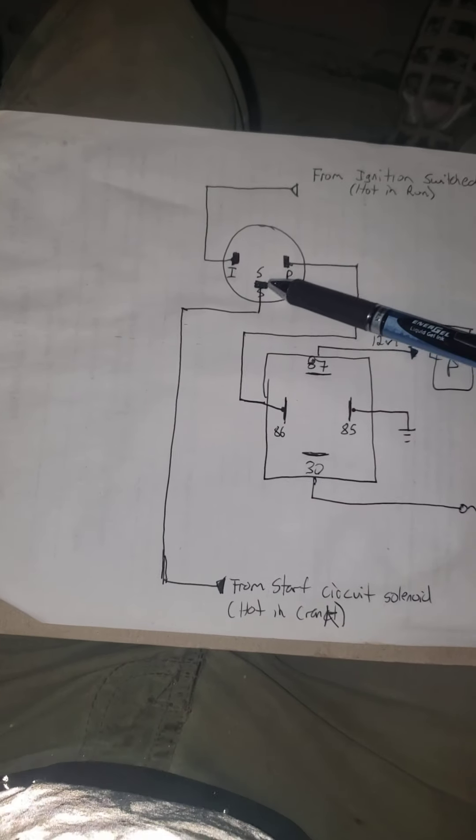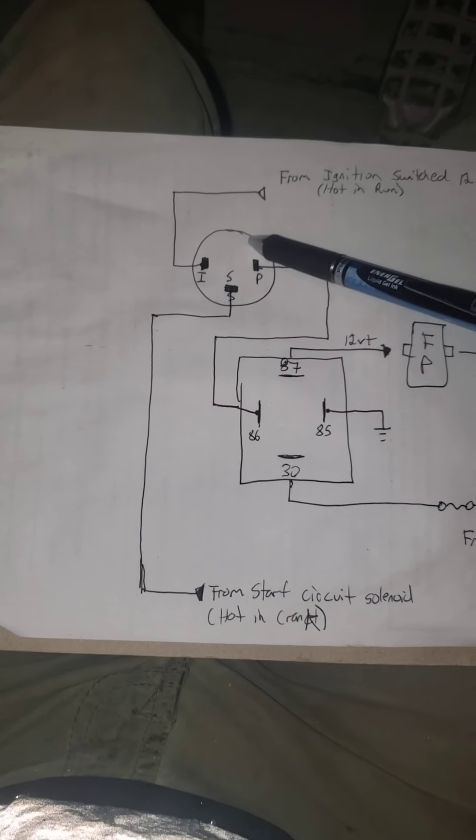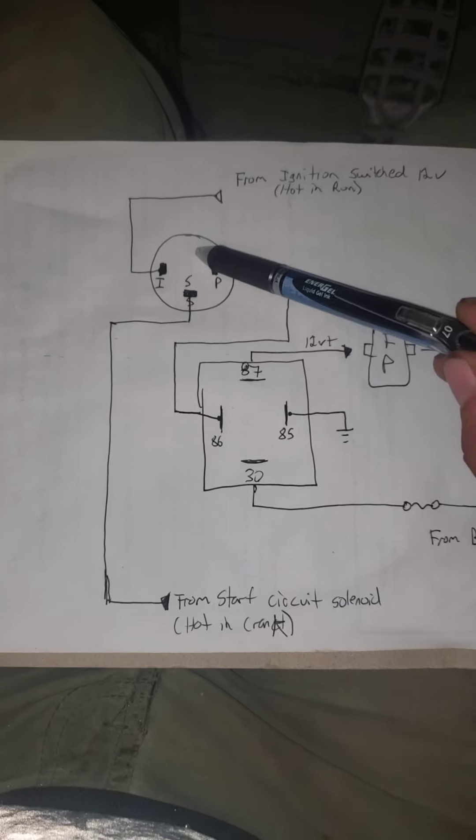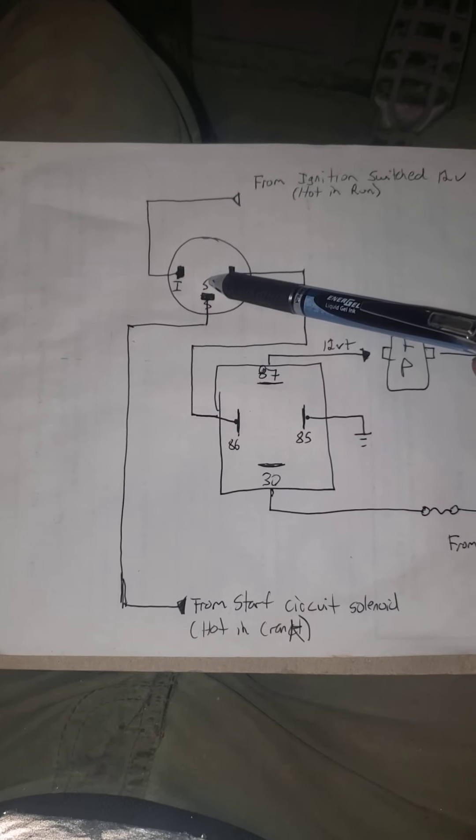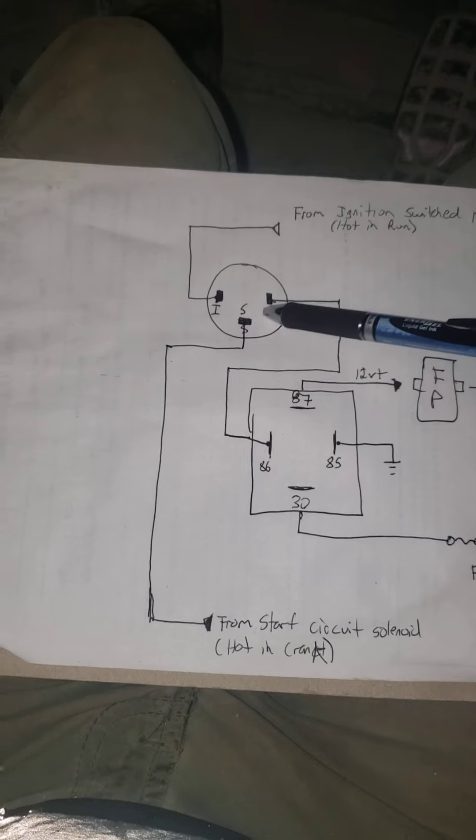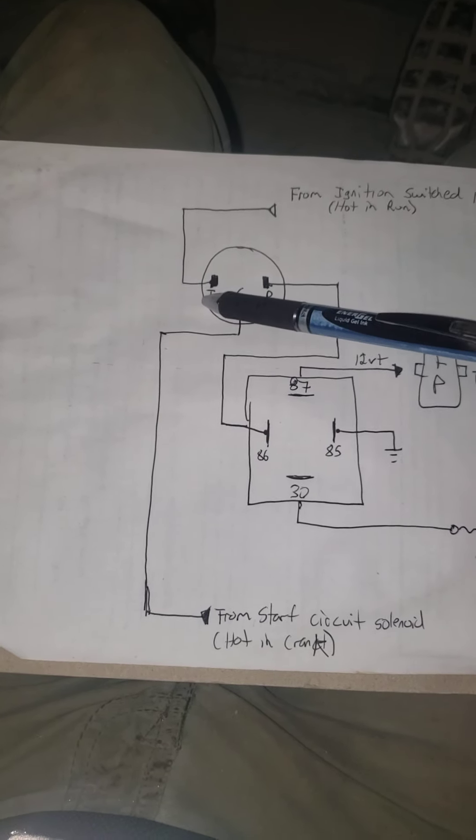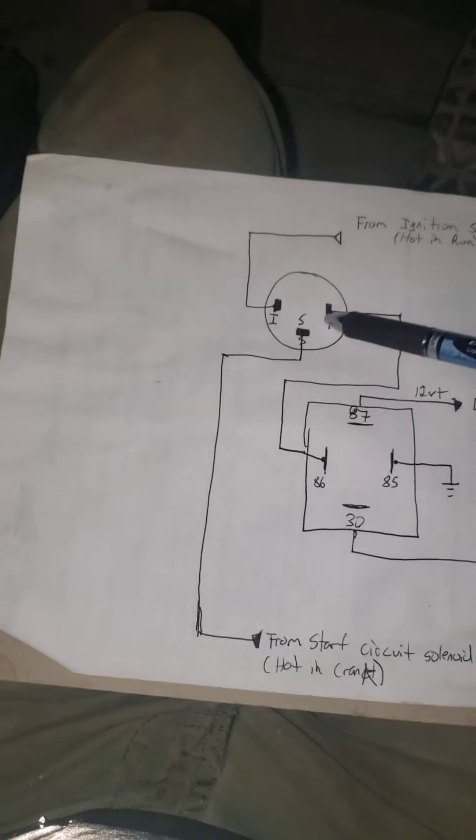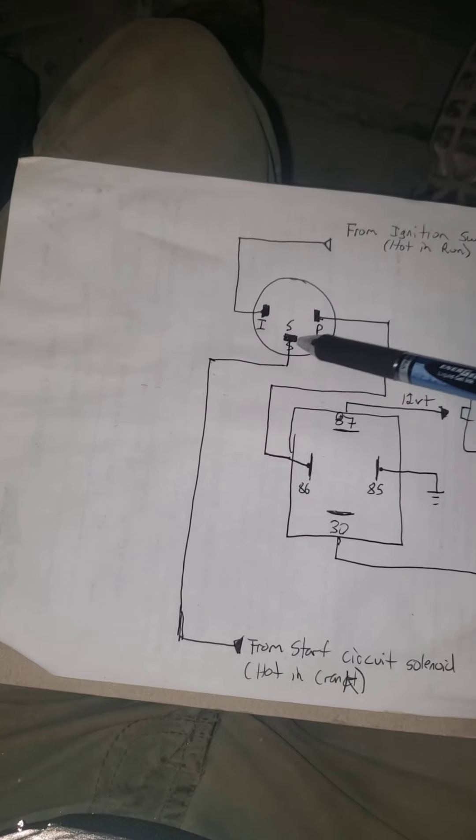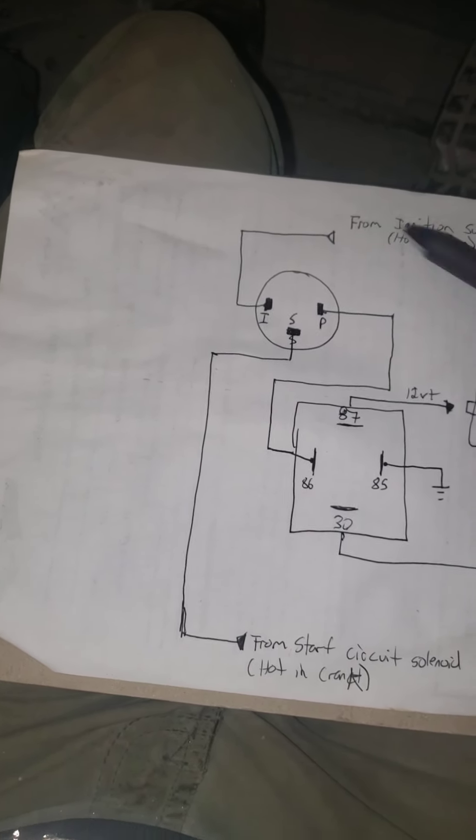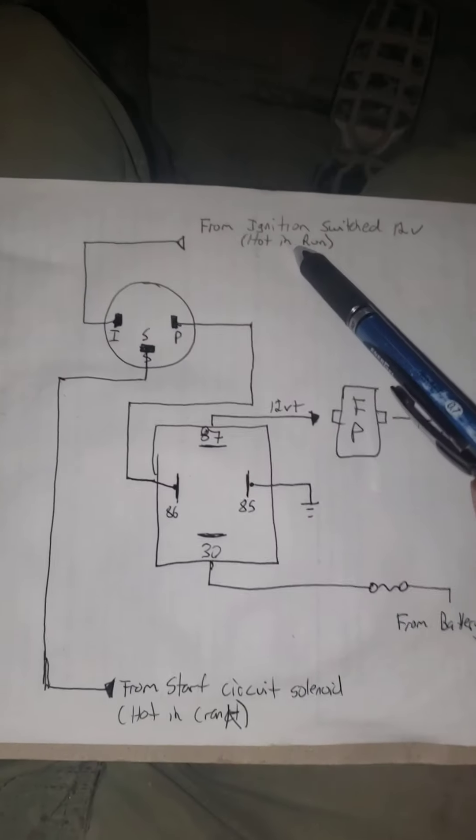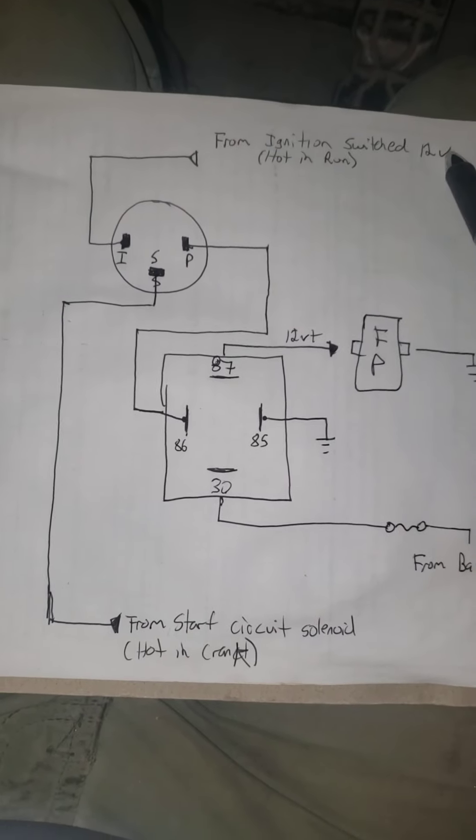After your engine starts, now your oil pressure sensor here, it's got pressure inside of it from the oil. Now these two contacts are no longer connected. The contact switches from S to I, so now I and P are connected and S is just by itself. Now that your engine is running, you have your switched ignition source. It's 12 volts and it's hot in run.